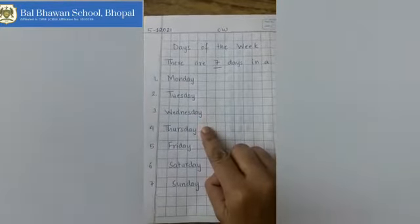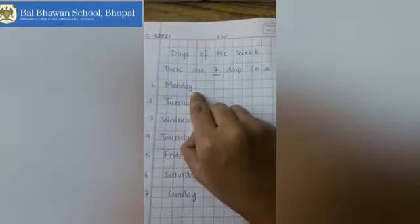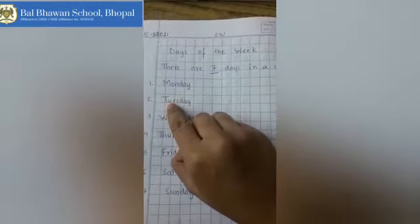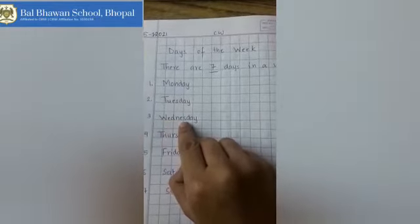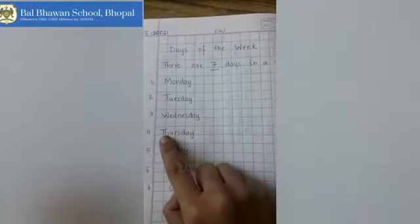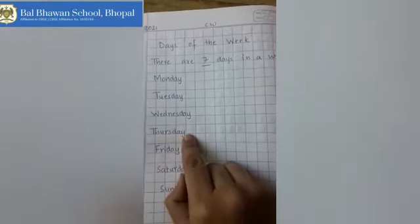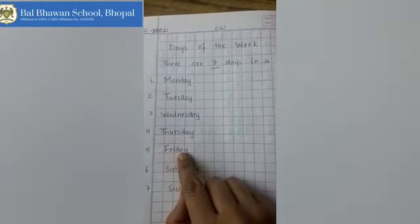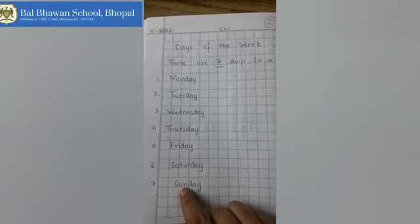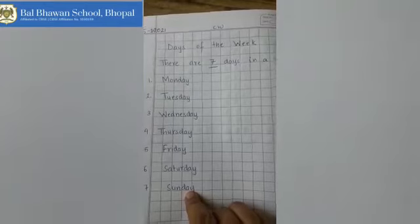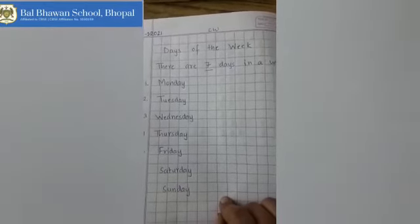Let's spell these words: M-O-N-D-A-Y Monday, T-U-E-S-D-A-Y Tuesday, W-E-D-N-E-S-D-A-Y Wednesday, T-H-U-R-S-D-A-Y Thursday, F-R-I-D-A-Y Friday, S-A-T-U-R-D-A-Y Saturday, S-U-N-D-A-Y Sunday. Now complete this work in your maths notebook and send the picture to me.